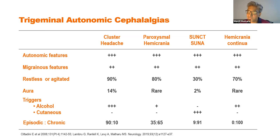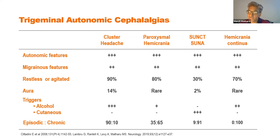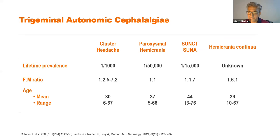Alcohol is a prominent trigger in about 70% of patients, typically triggering an attack within half an hour. Other triggers include chemical smells, warm environments, and exercise. The vast majority of patients are episodic — bouts lasting a few weeks to a few months followed by pain-free periods. However, 10 to 20% have the chronic variant with daily attacks and no significant remission. Epidemiologically, cluster headache occurs in approximately one in a thousand, with a male predominance, and a mean age of onset around 30.